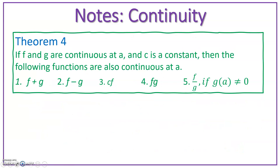Let's introduce Theorem 4. It says: if functions f and g are continuous at a and c is a constant, then the following functions are also continuous at a — the sum f plus g, the difference f minus g, the constant times the function, the product of the two functions, and the quotient of the two functions, so long as g of a is not 0.